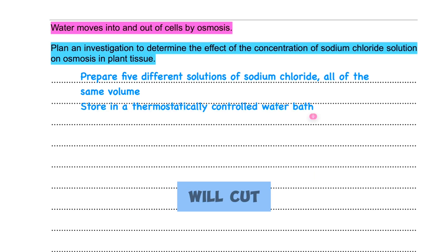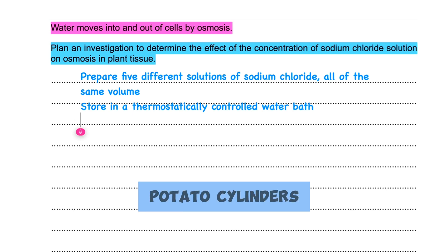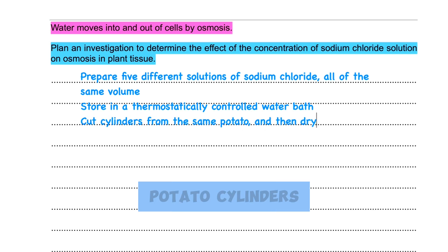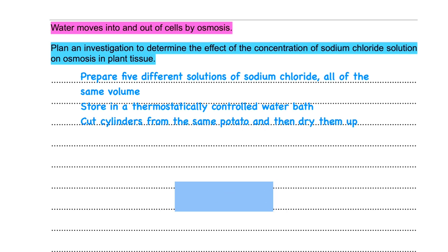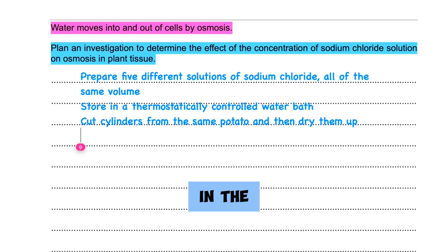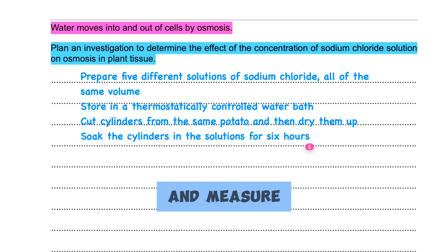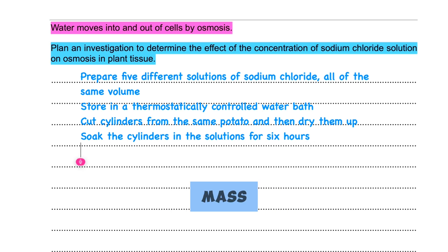Then we will cut potato cylinders, all taken from the same source. We will dry these potato cylinders and then soak them in the solutions for about six hours. Then dry these potatoes and measure the percentage change in mass.